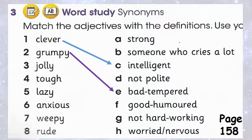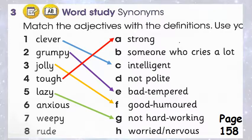Number three: Good humoured. Number four: Tough, strong. Number five: Lazy, not hard-working.